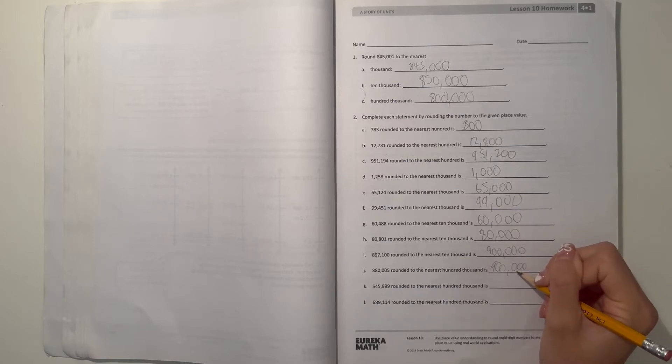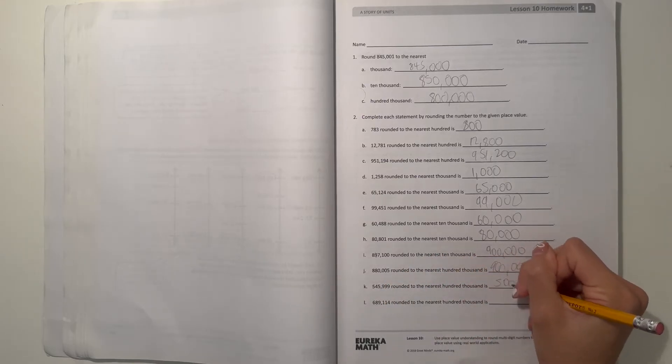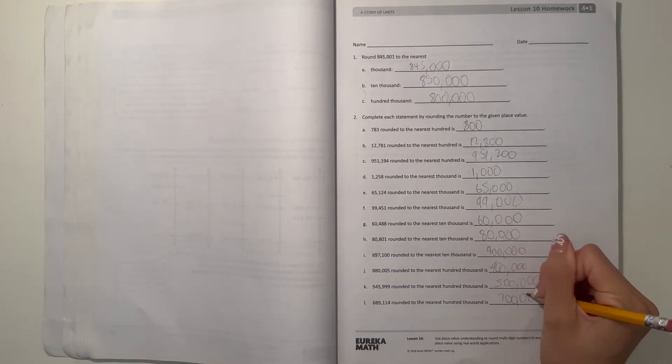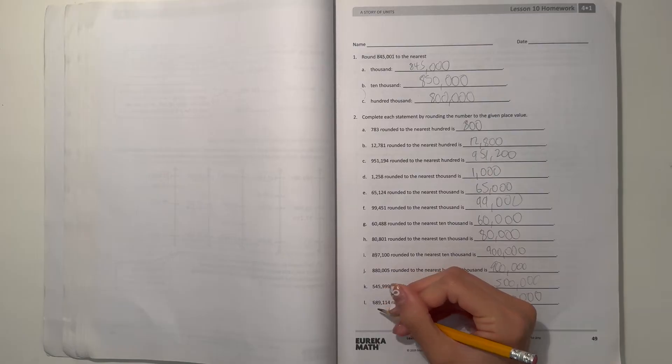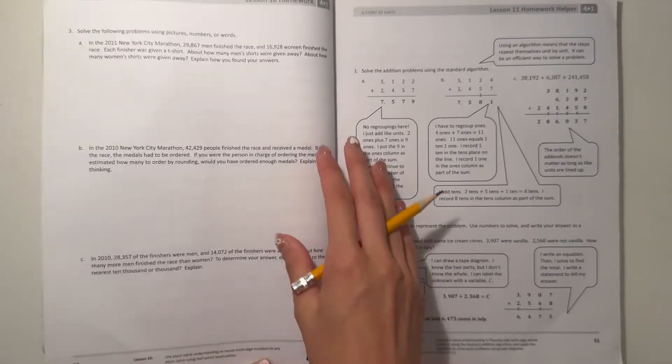And then K, 545,999 to the nearest 100,000, that would actually round down to 500,000. And L, 689,114 to the nearest 100,000 would be 700,000 because we're passing the halfway mark and so then we round up. All right next page.